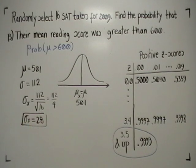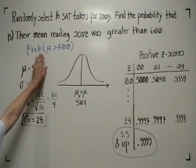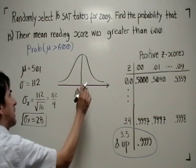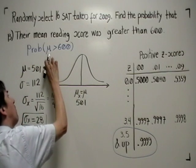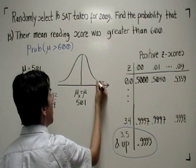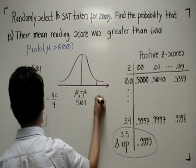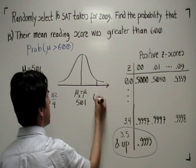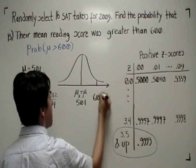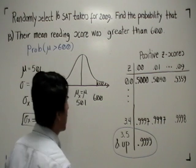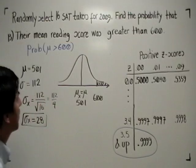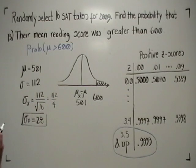So what are we going to do? In order to find the probability that the mean score was greater than 600, we're going to look at this distribution of the means, and we're going to ask, what's the probability that my mean score was greater than 600? Right there, to the right.